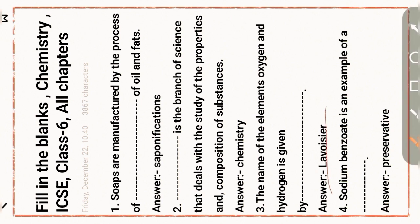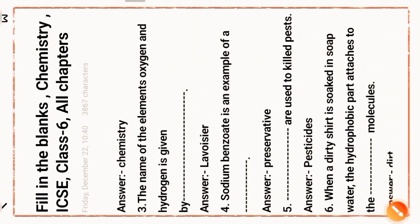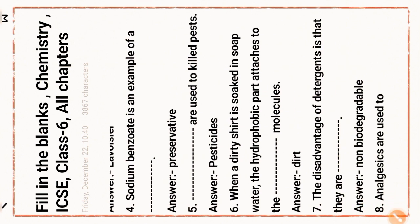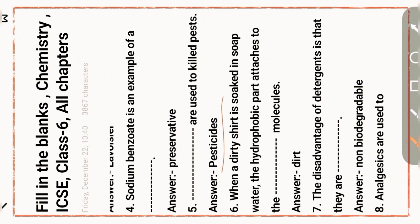Next question: sodium benzoate is an example of a preservative. Next question: dash are used to kill pests — answer: pesticides. Next question: when a dirty shirt is soaked in soft water, the hydrophobic part attaches to the detergent molecule. The disadvantage of detergents is that they are non-biodegradable.